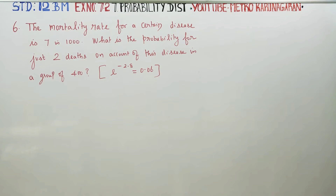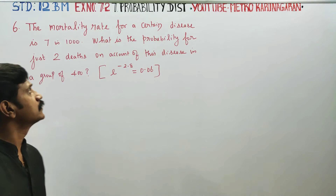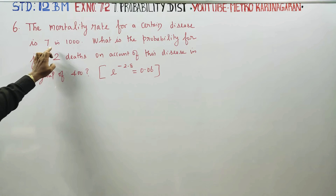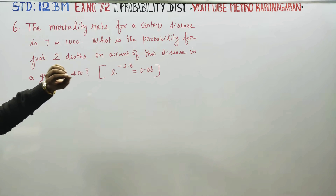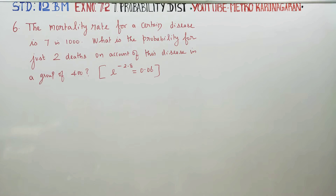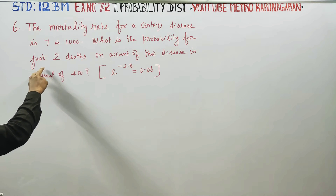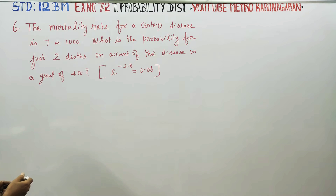Dear 12th Standard Business Math students, I am Etro Karanagaran. In exercise number 7.2, the mortality rate for a certain disease is 7 in 1000. Find the probability of just two deaths on account of the disease in a group of 400.